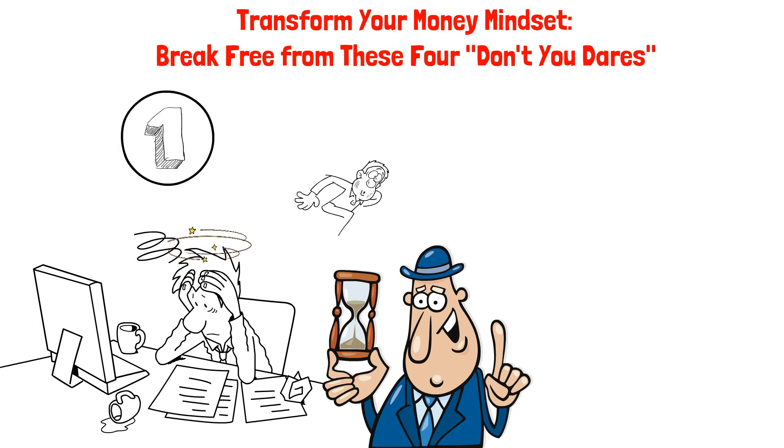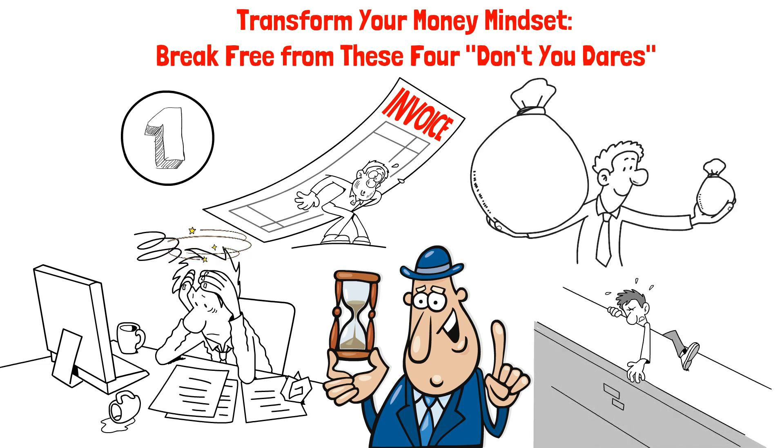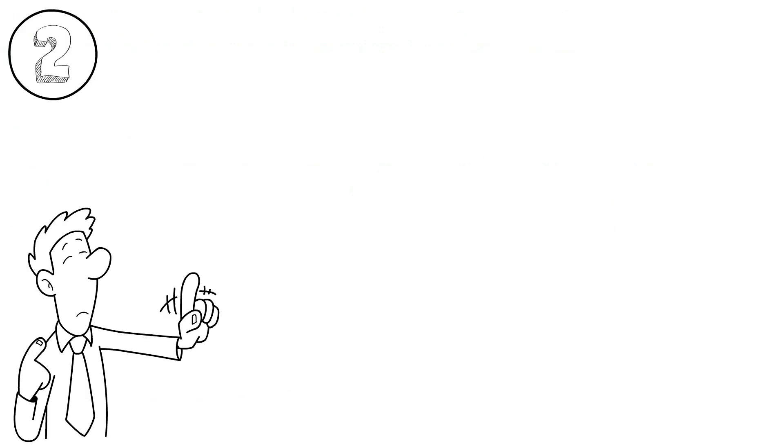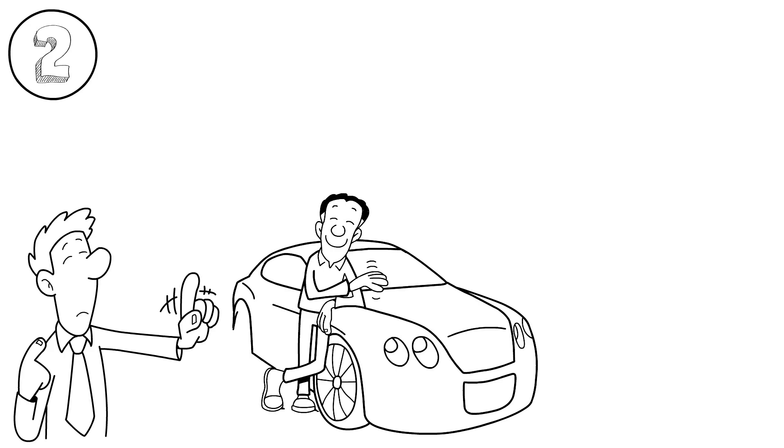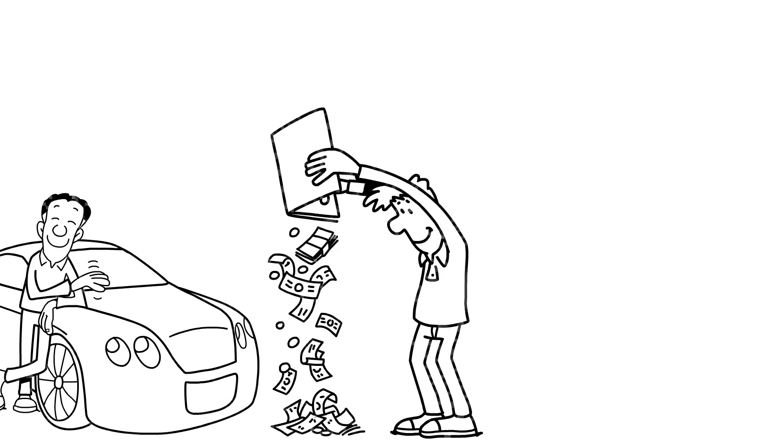First, don't you dare spend money on credit if you can't pay it off within a month. This may seem tempting, but it's a slippery slope that can lead to high interest debt and financial stress. Treat your credit card like a debit card and only spend what you can afford. Second, don't you dare fall into the CEO lifestyle. It's easy to convince ourselves that we need certain things to live the lifestyle we want, but the reality is that we don't. Spend according to your budget, not your ego.